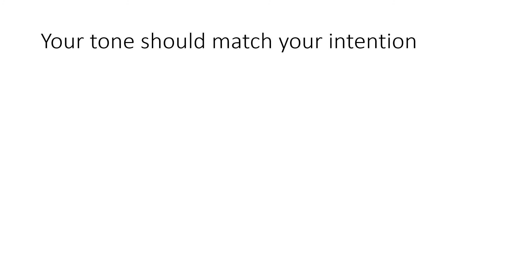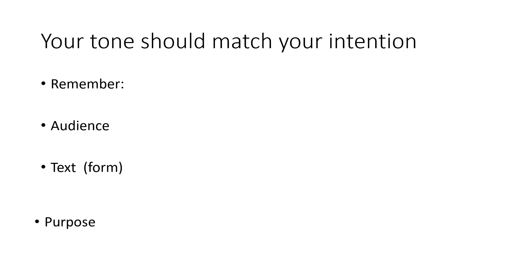Remember three things: audience — who the piece of writing is written for; the text — the format and form, and what text features you need for different pieces of writing (make sure you revise that); and purpose — what is the purpose of the piece of writing. Practice looking at a piece of reading: who is the audience, what is the text, and what is the purpose — then identify what the tone is. Use the other videos on this site to help you review and revise for Functional Skills. Bye bye now.